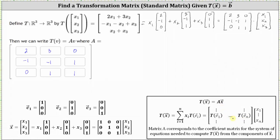So let's also show this. Let's find the transformation of vector e sub one, which is the transformation of the vector (1, 0, 0), meaning x sub one is one and x sub two and x sub three are both zero. Under this transformation, the first component is two times one plus three times zero, or two. The second component is negative one minus zero plus zero, or negative one. And the third entry is zero plus zero, which is zero.